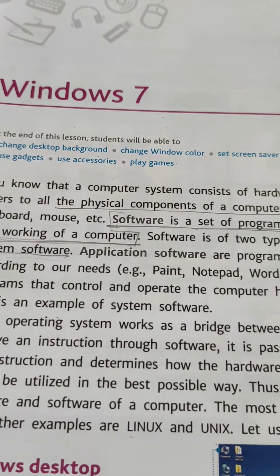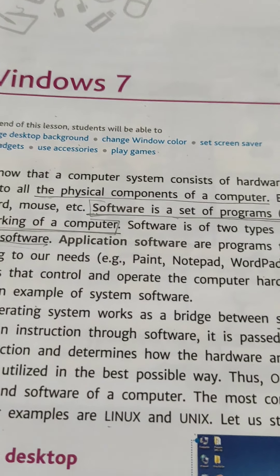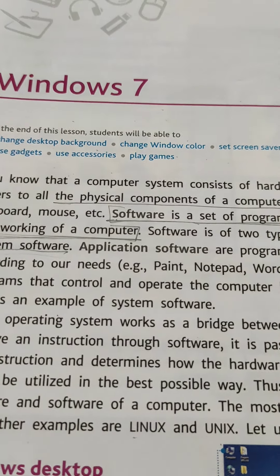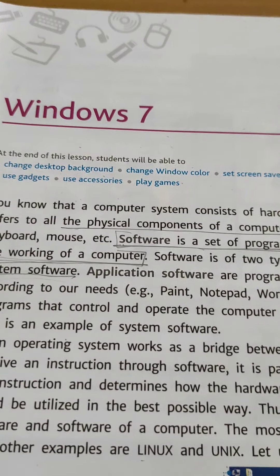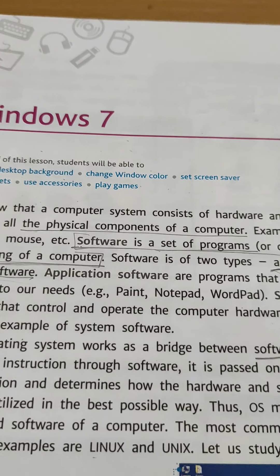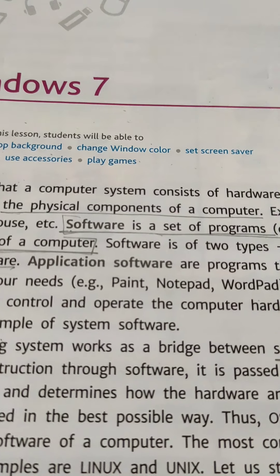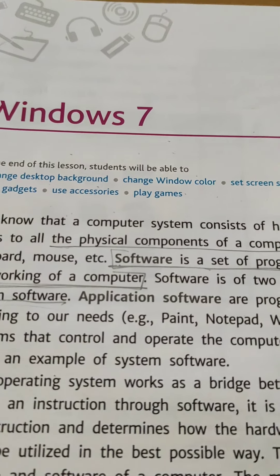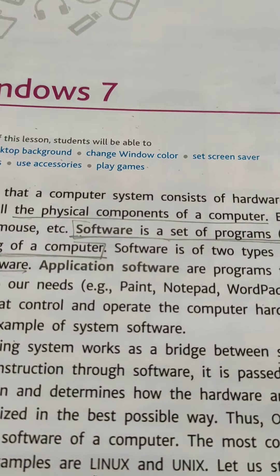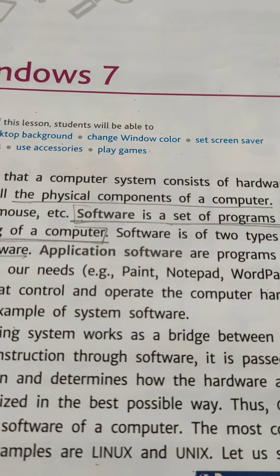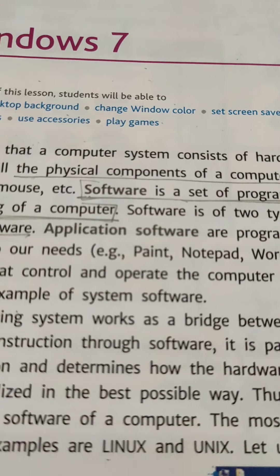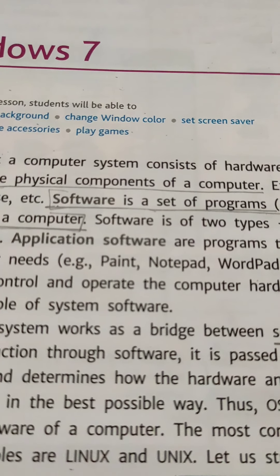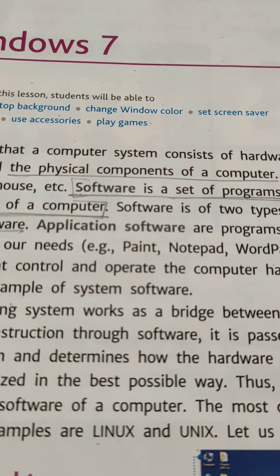You know that a computer system consists of 2 main components: hardware and software. Hardware refers to all physical components of the computer. Examples of hardware are monitor, keyboard, and mouse — all input and output devices are hardware.